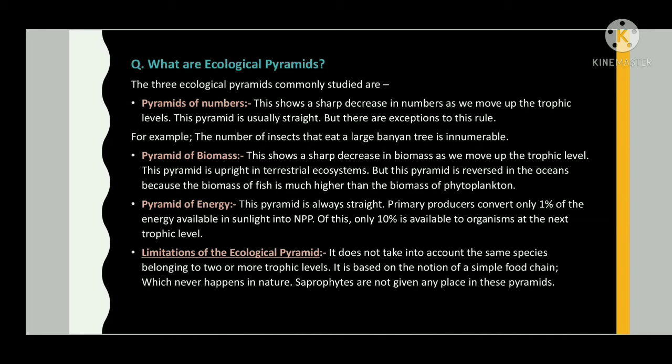What are ecological pyramids? The three ecological pyramids commonly studied are: pyramid of numbers, which shows a sharp decrease in numbers as we move up the trophic levels. This pyramid is upright in terrestrial ecosystems but reversed in oceans, because the biomass of fish is much higher than the biomass of phytoplankton.